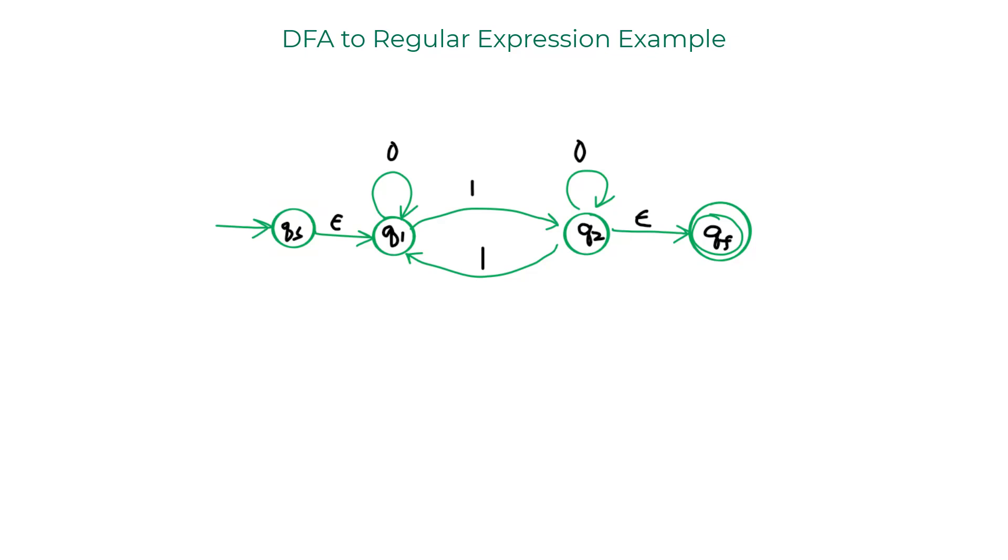One more strong rule enforced in a GNFA is that from a start state, there should always be arrows that are pointing outwards. The start state cannot have a loop. Similarly, even the accept state, it should have arrows pointed inward. And the final accepting state should not have a loop.